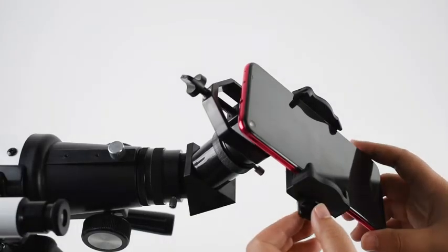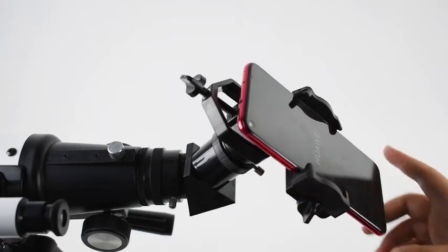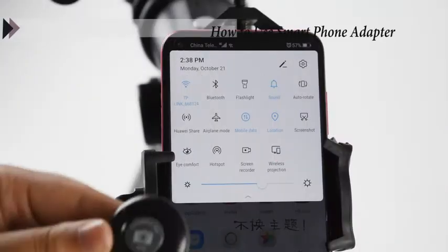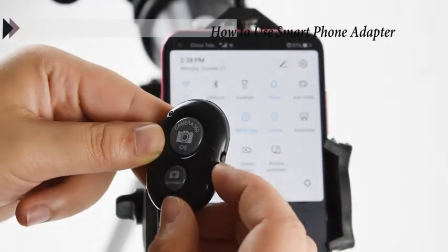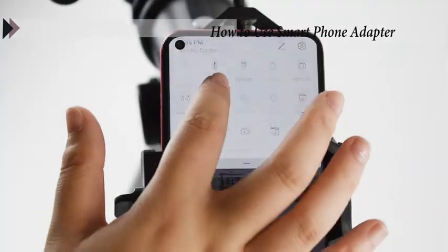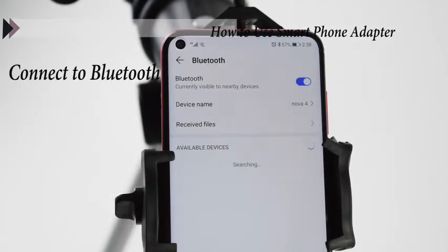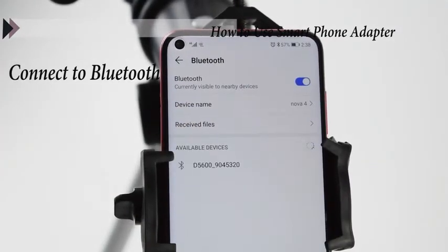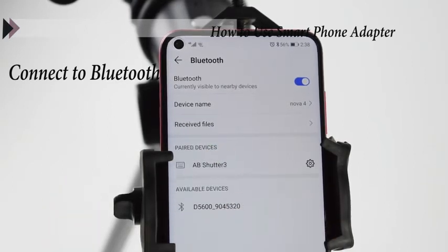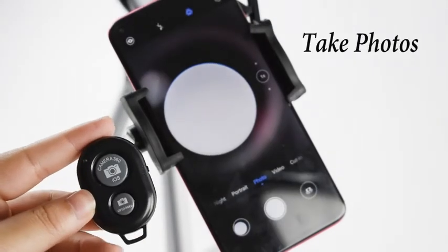Install the phone adapter on the eyepiece, and aim the phone lens at the eyepiece. Turn on the bluetooth button switch and find the bluetooth named App Shutter 3 in the phone. Press the camera button to take a photo.